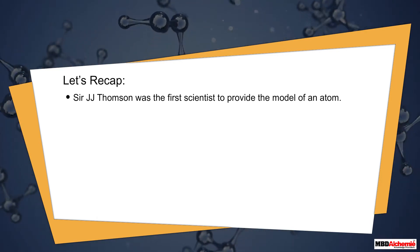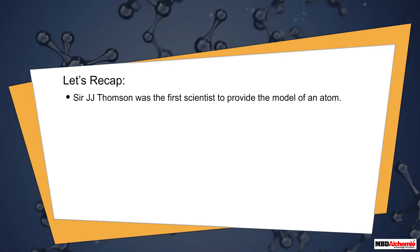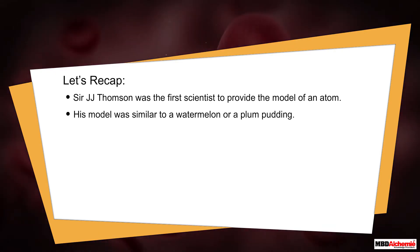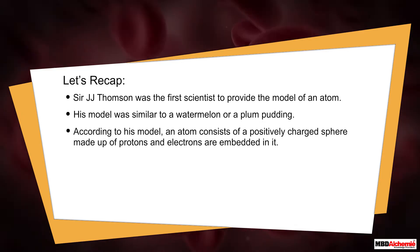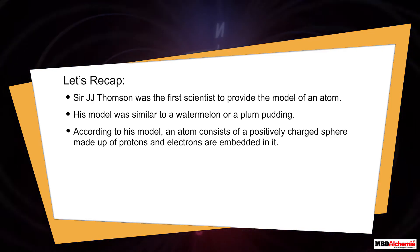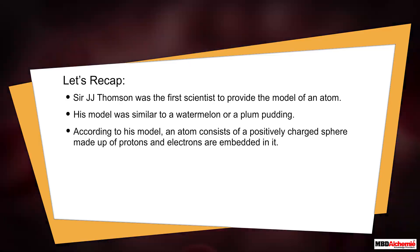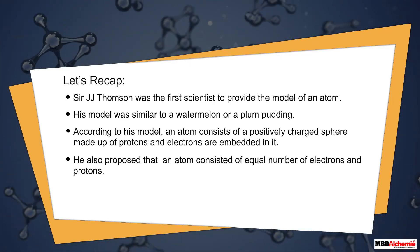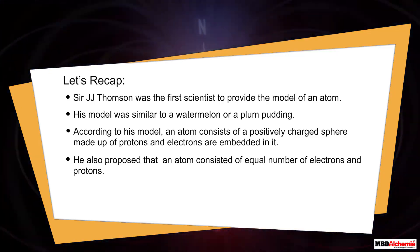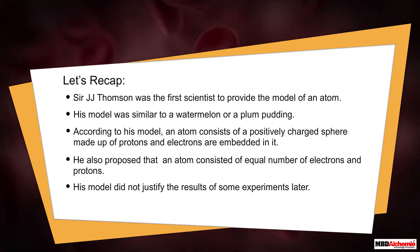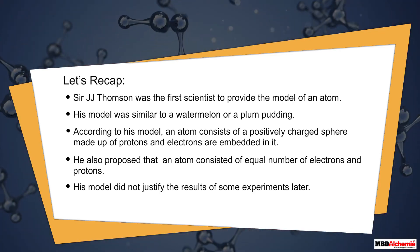To recap: Sir J.J. Thompson was the first scientist to provide a model of an atom. His model was similar to a watermelon or plum pudding. According to his model, an atom consists of a positively charged sphere made up of protons, with electrons embedded in it, and an equal number of electrons and protons. His model, however, did not justify the results of some experiments later.